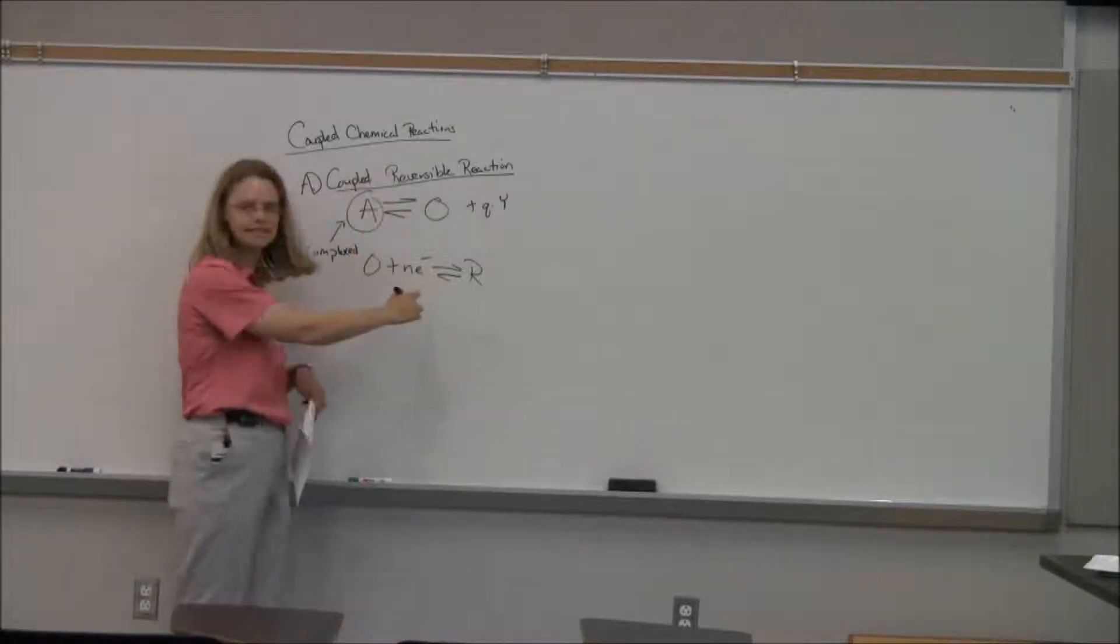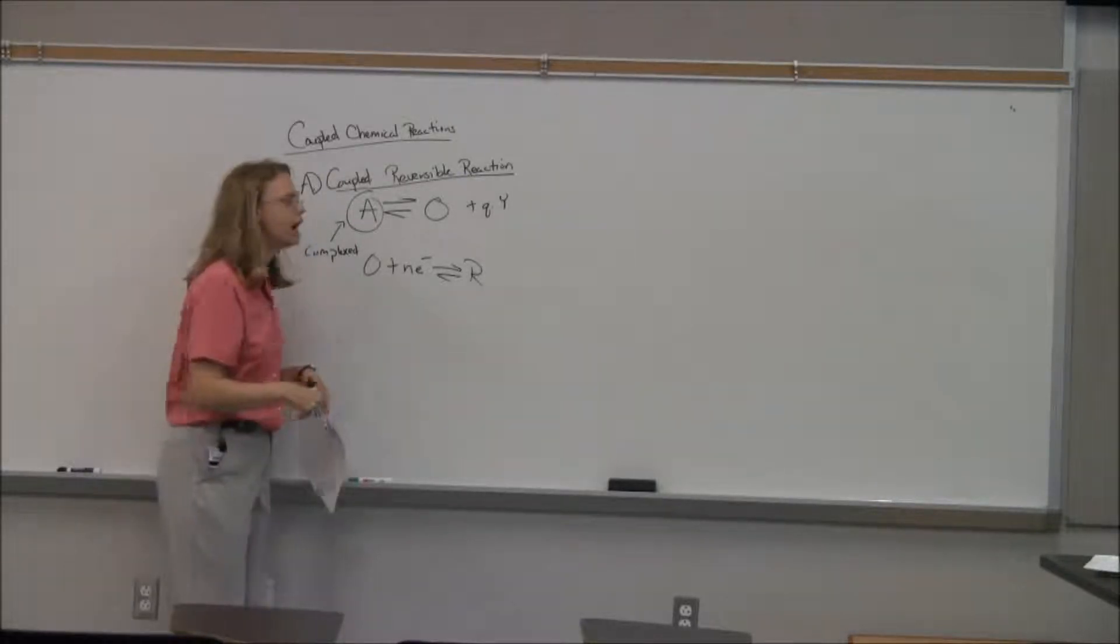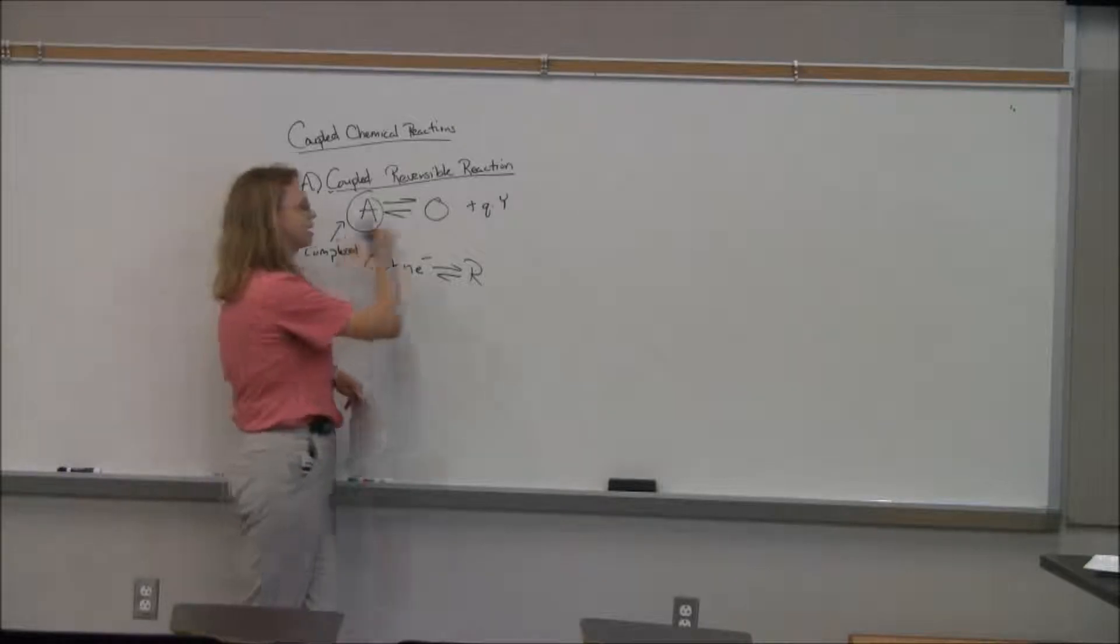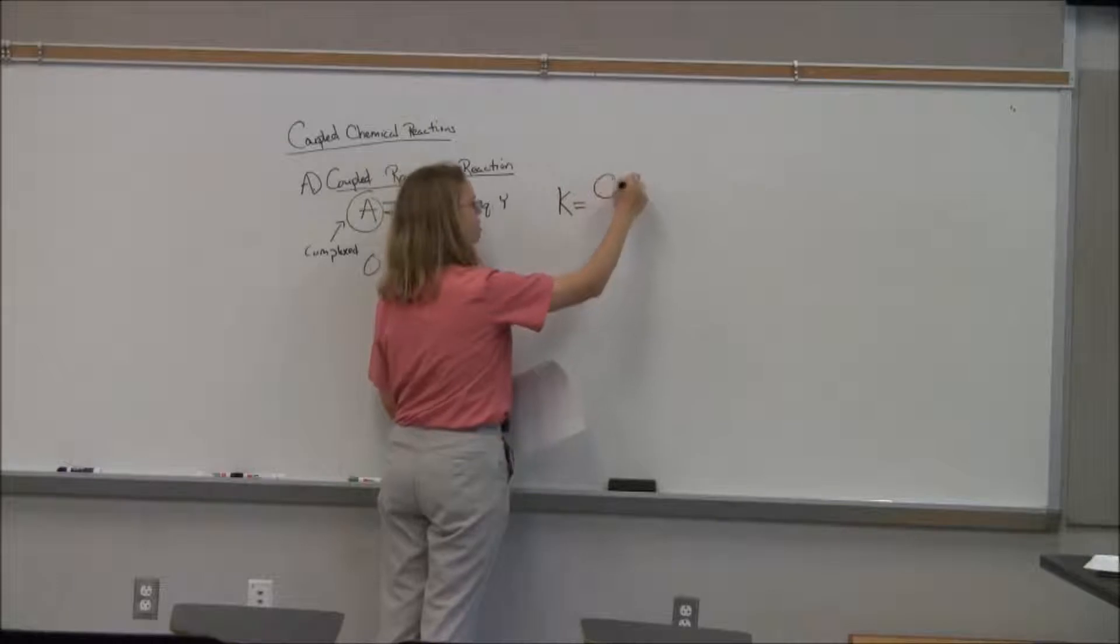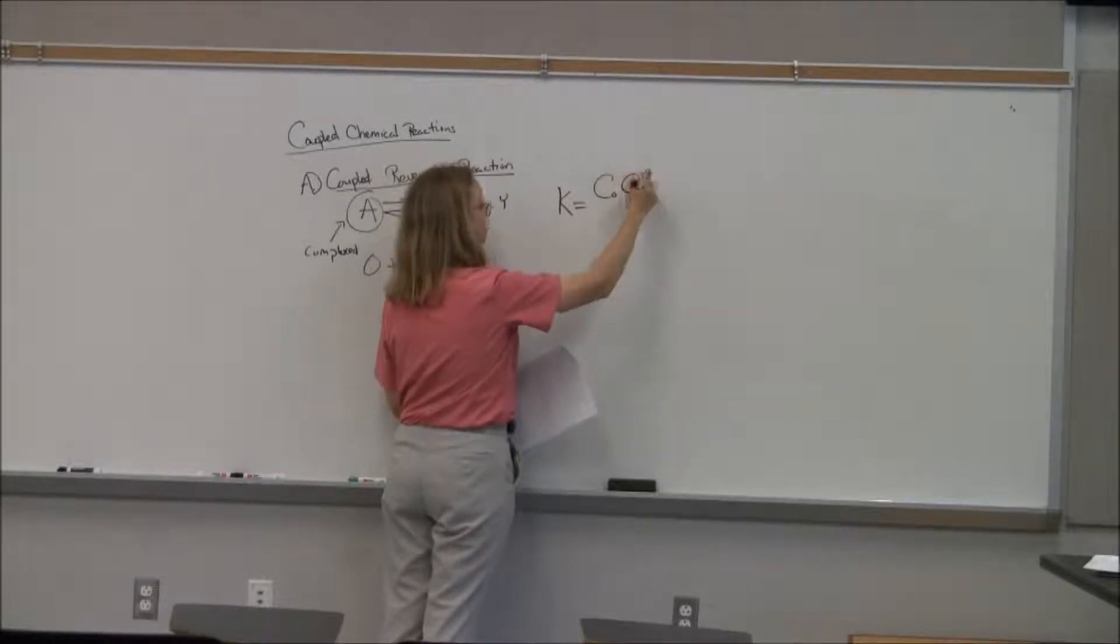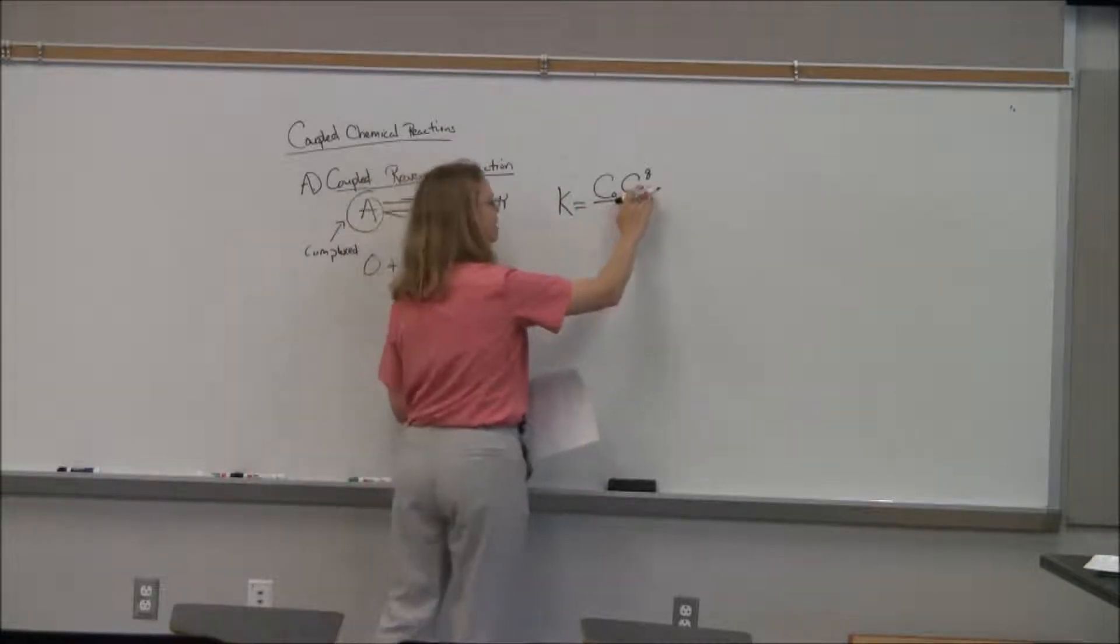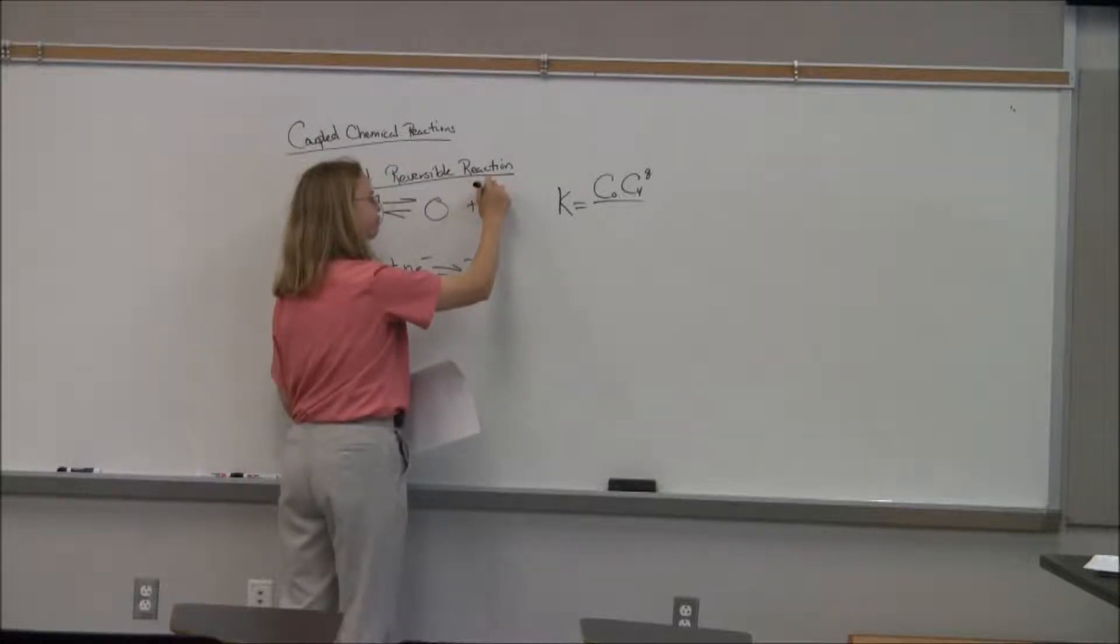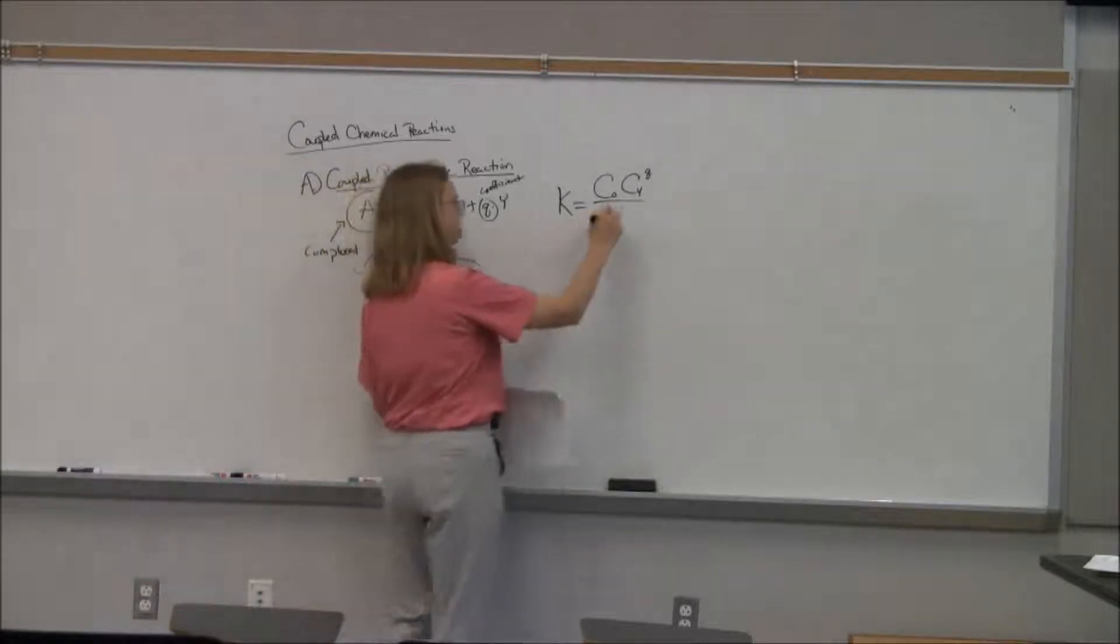But you can't go ahead and detect it until it comes out of the complex. Once it's complexed, you're not going to see it. And so that's the kind of coupled chemical reaction they're talking about here. You could write an equilibrium coefficient for this: concentration of O times the concentration of Y. I pulled this out of the text. I don't know why they would use Q. Q's not charge. It's just the coefficient.